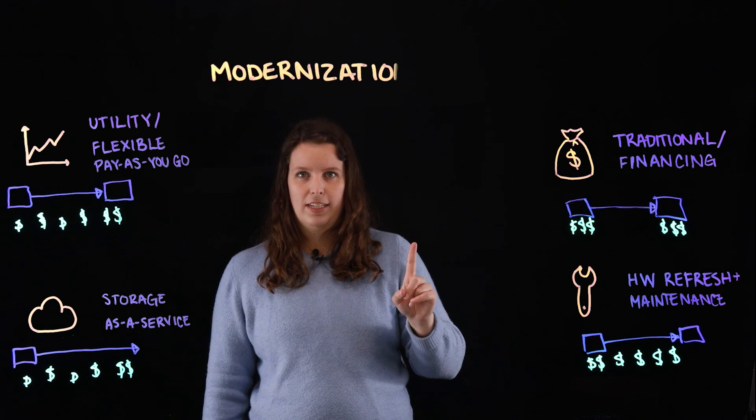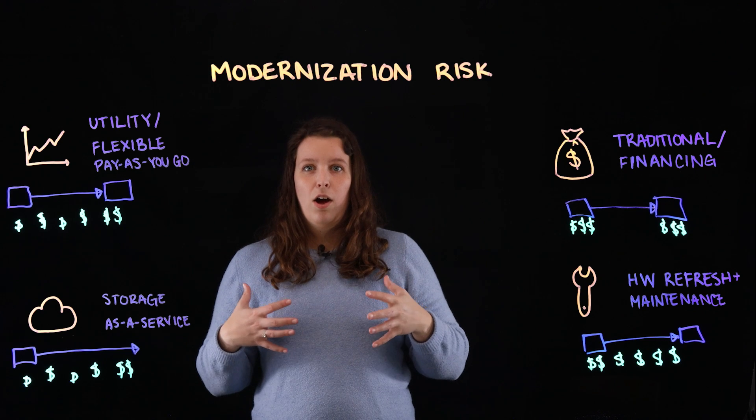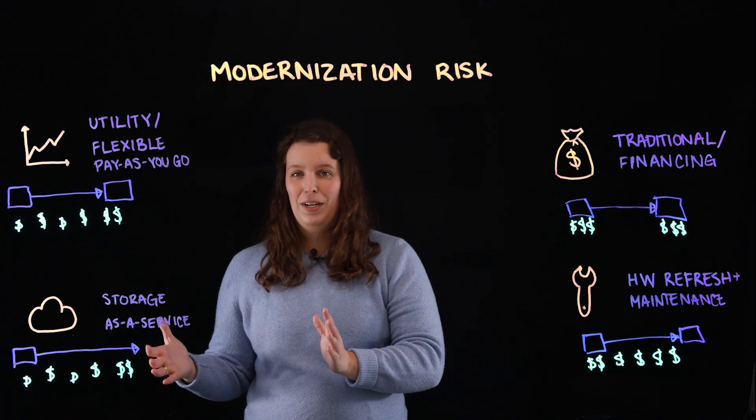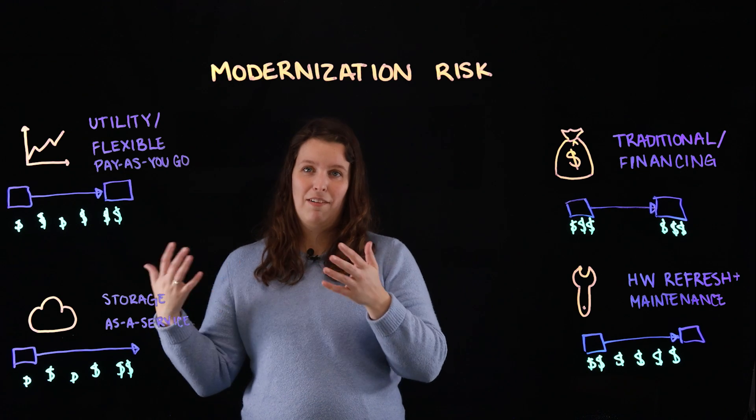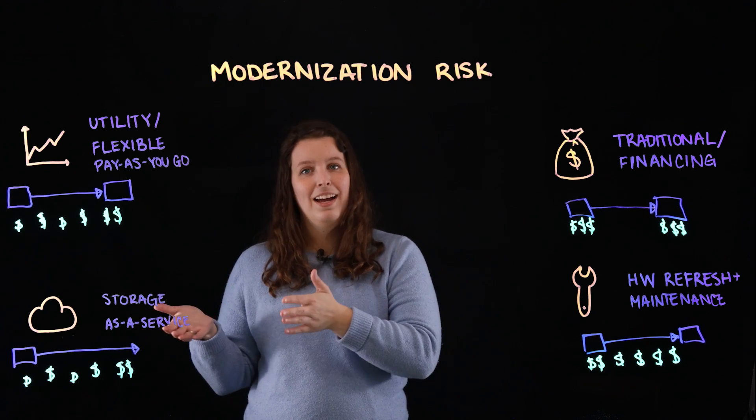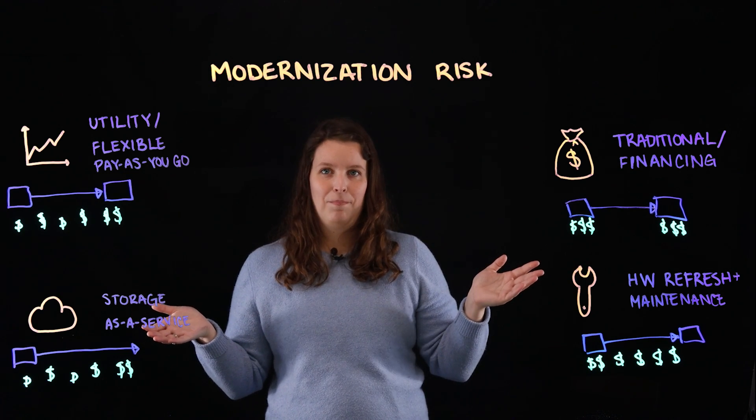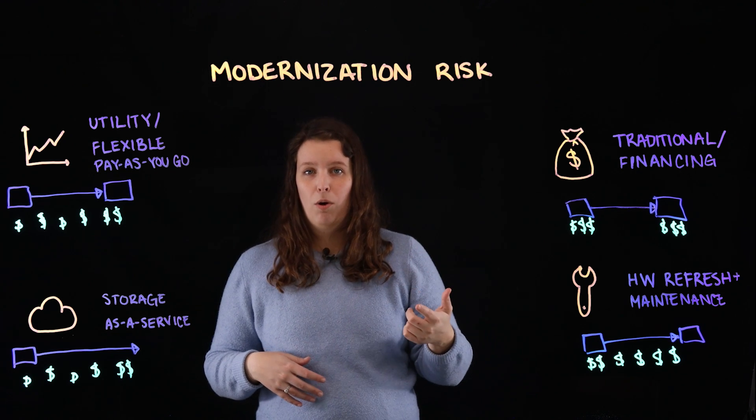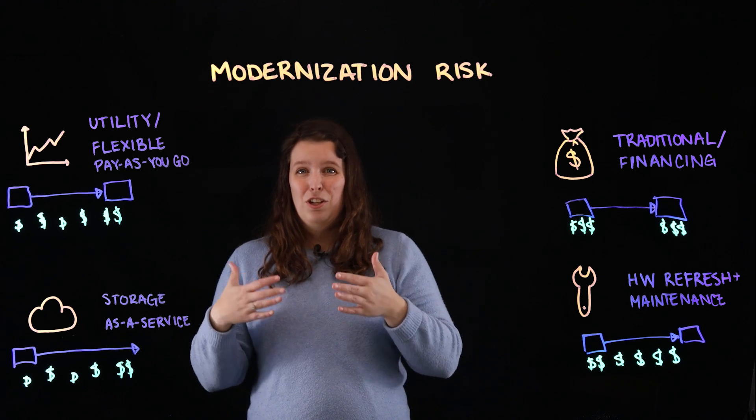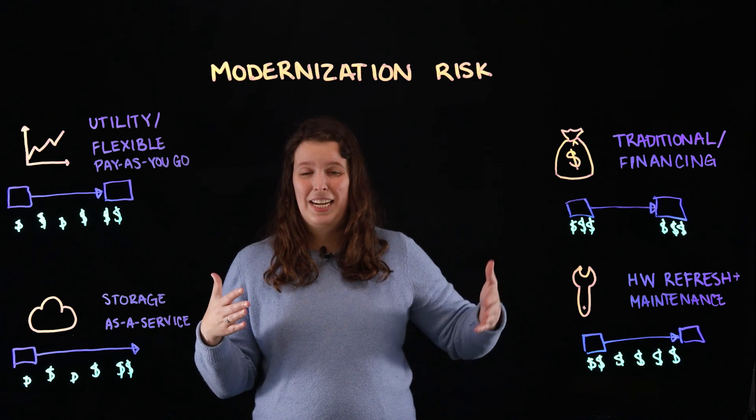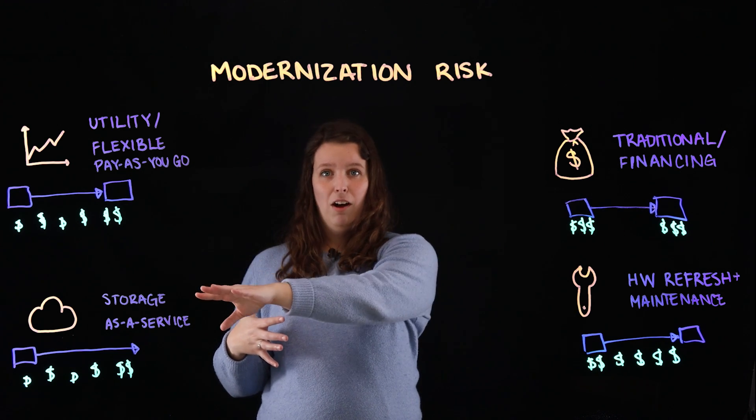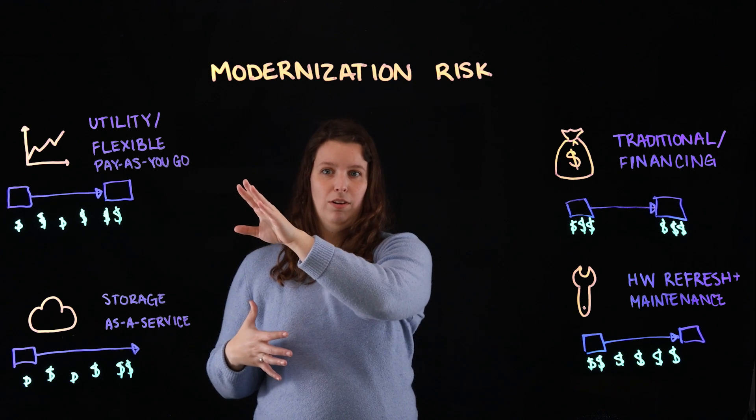Number one is modernization risk. How modern do you want to stay? For some of your use cases, it's all right if you have a box, it stores your data and it lasts for a long time. But some use cases you need to keep up with regulatory requirements or business needs over time. So you want pretty consistent hardware refreshes, which some of these models offer and some of these models do not as well.